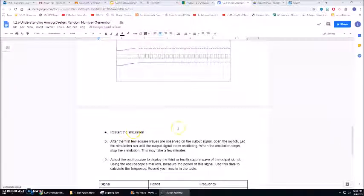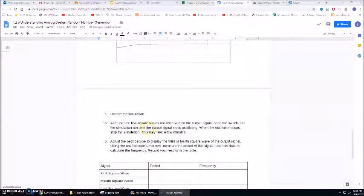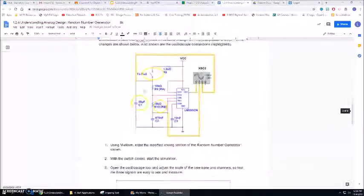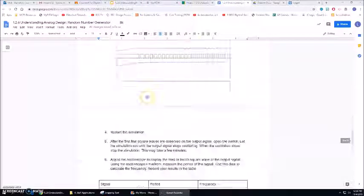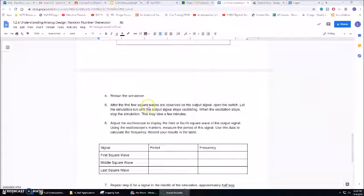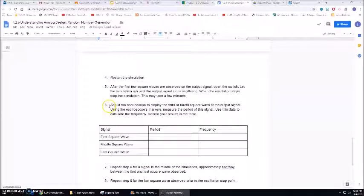After you have that established stop the simulation and restart it and after the first few squares are observed on the output signal open the switch. So that means actually as the simulation is running click in your diagram and open the switch. What you're going to notice is that the oscillation is going to slow and then stop. It may take a few moments so be patient.